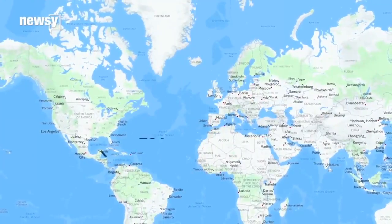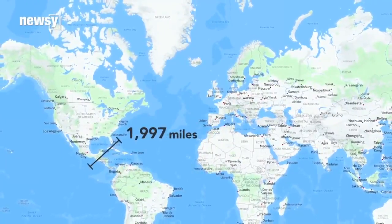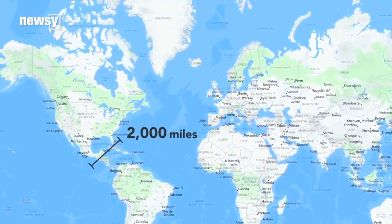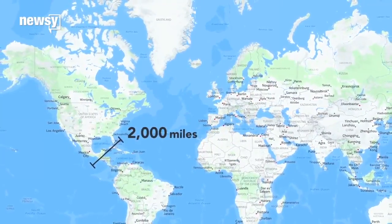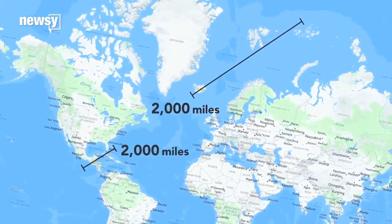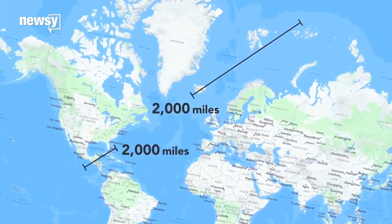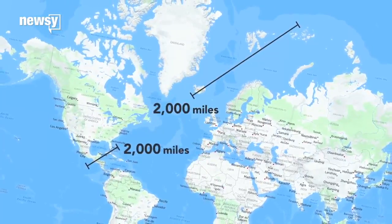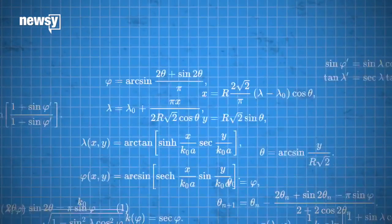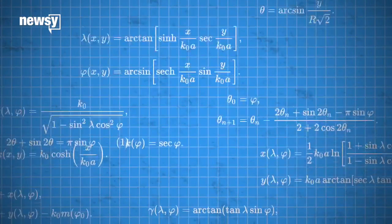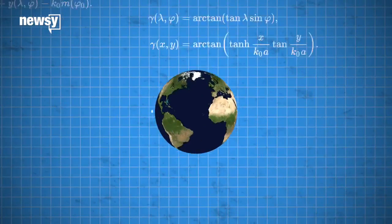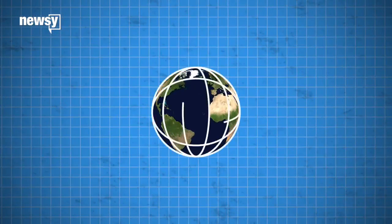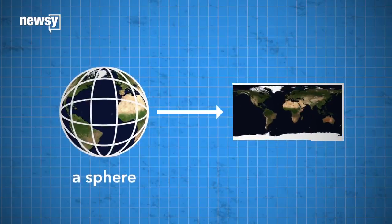For the same reason, this is what 2,000 miles looks like on a Mercator map — but so is this. It's the same distance. The fault is in the map. This happens because map makers have to rely on mathematical formulas to project the surface of the earth, a sphere, onto the surface of a map, a plane.